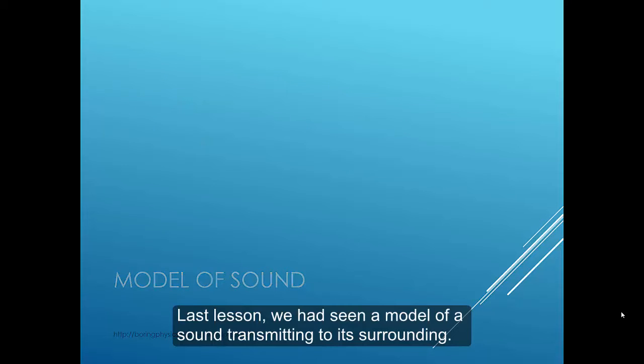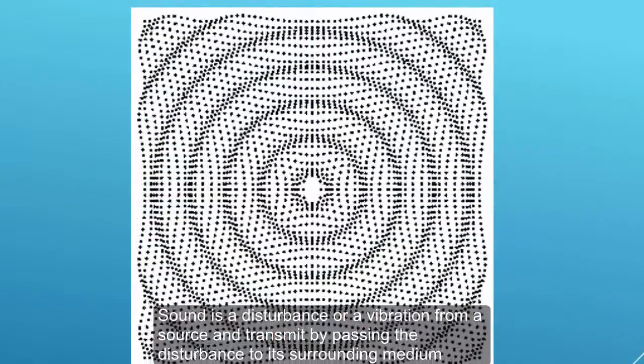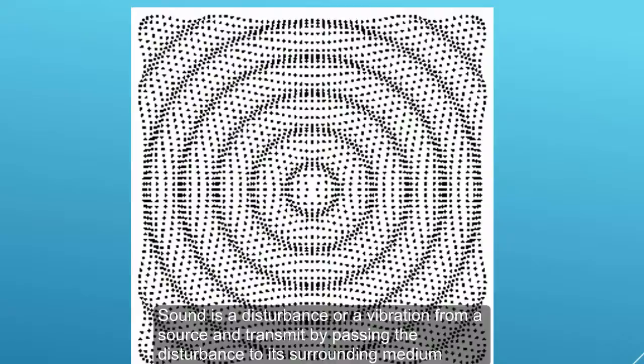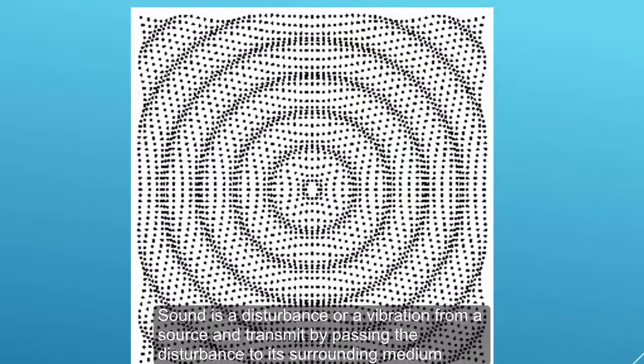Last lesson, we have seen the model of sound waves transmitting to its surroundings. Sound is a disturbance or a vibration from a source and transmits by passing the disturbance to its surroundings medium, which is usually air.